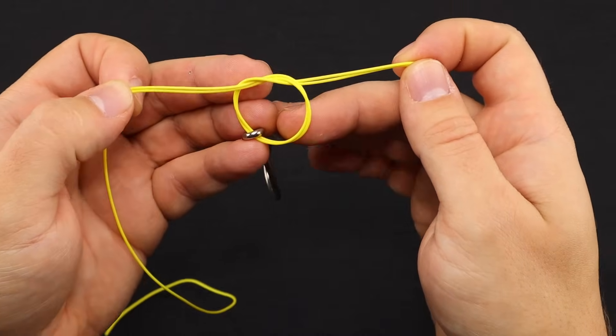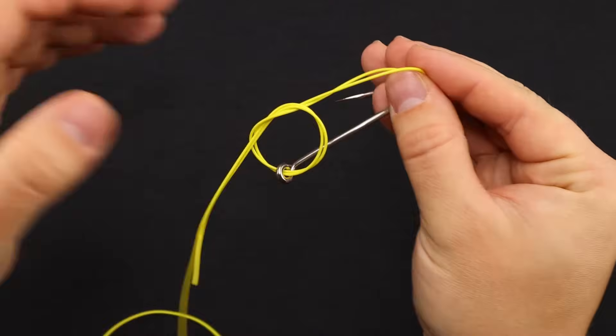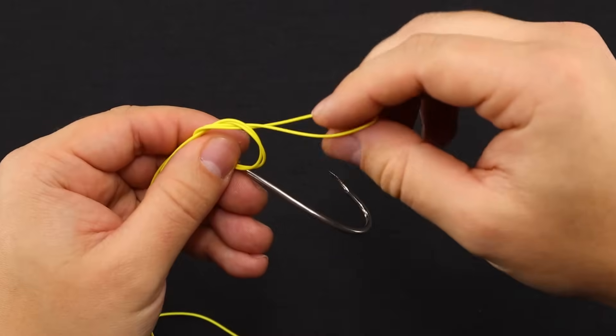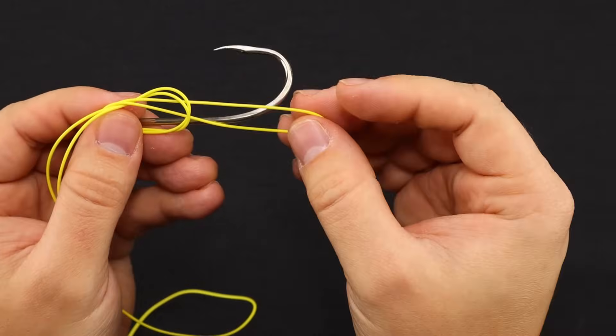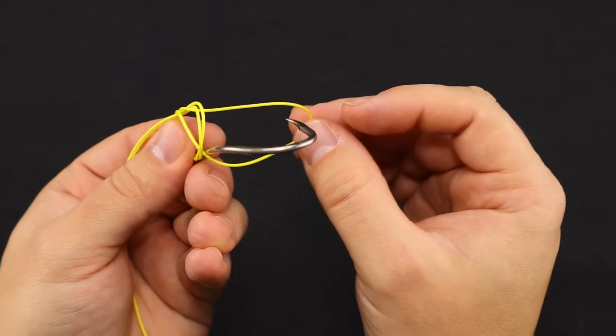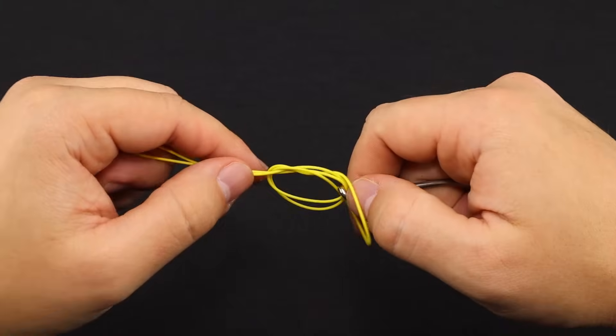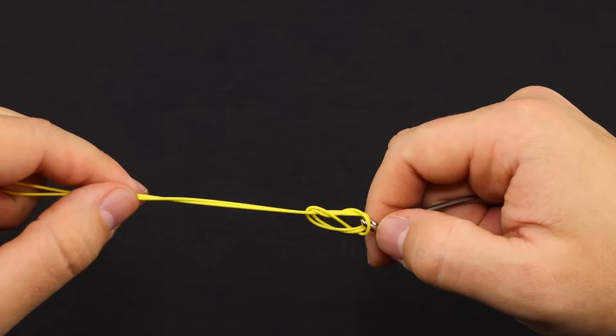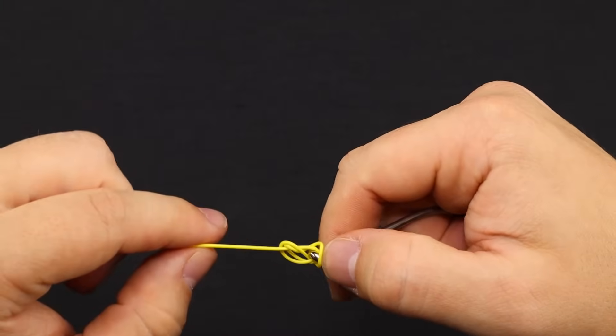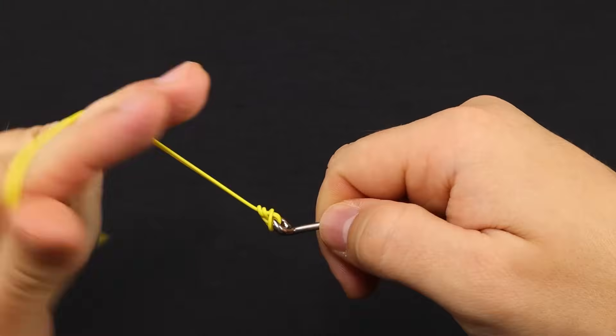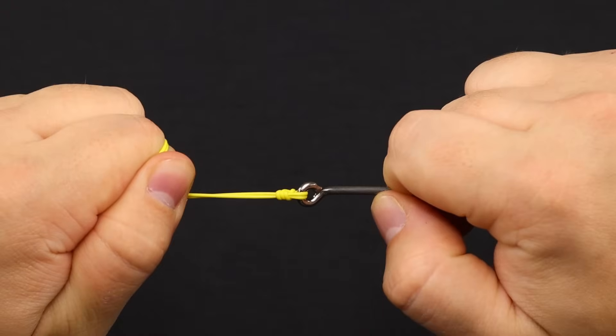Now you don't want to tighten this overhand knot quite yet. With the loop end here, you're going to place that around the item you're trying to tie to, just like so. And then on the left here, go ahead and start cinching everything together and give it a nice tug to cinch that knot.